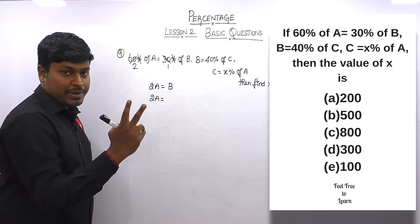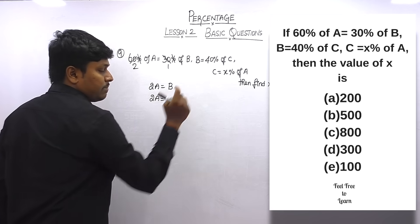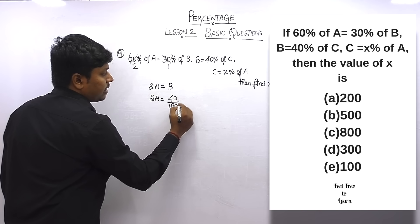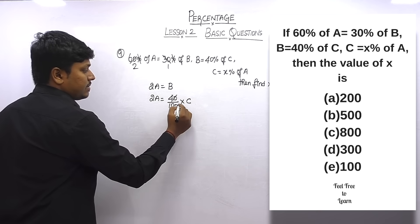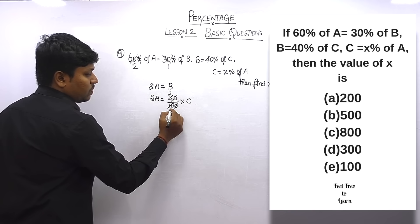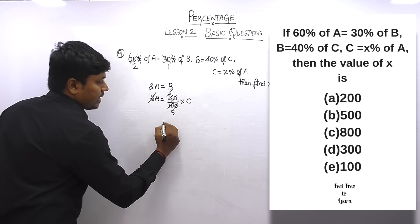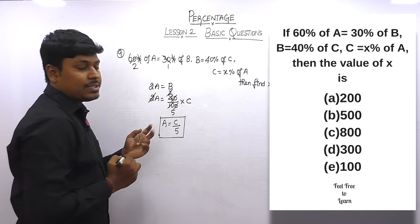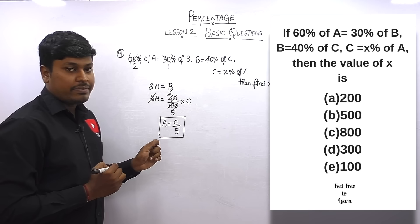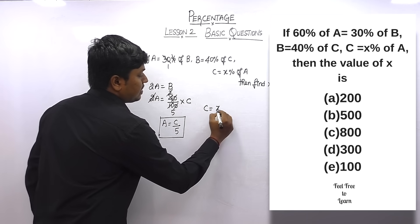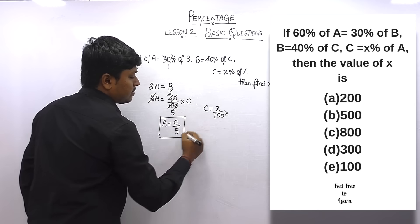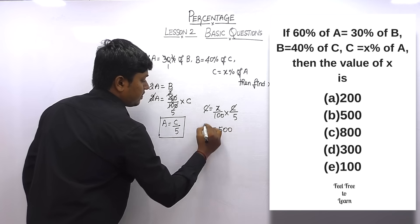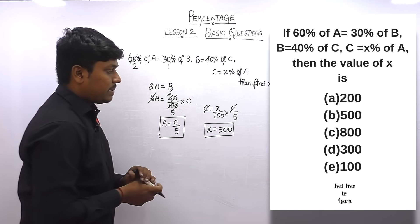Substituting b = 40% of c: 2a = (40/100)c. Simplifying: a = c/5. Substituting into expression 3 (c = x/100 × a = x/100 × c/5): cancelling c gives 1 = x/500, so x = 500. The answer for question 9 is x = 500.